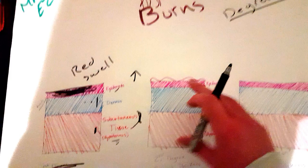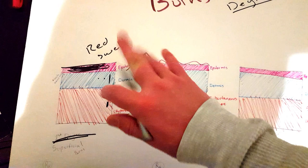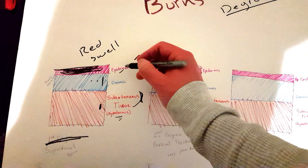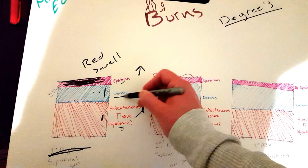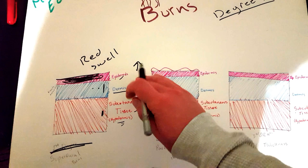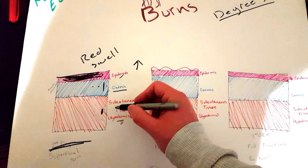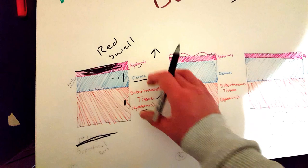Before I get into the degrees, I'm going to cover the different layers of skin. There are three layers to your skin: the epidermis, dermis, and hypodermis. Epidermis - epi means above and dermis means skin, so it's the top layer. Dermis is the skin. Hypo means below dermis - the layer below. So above layer, middle layer, below layer. The hypodermis is also known as subcutaneous tissue or fatty tissue because it's pretty much just fat.